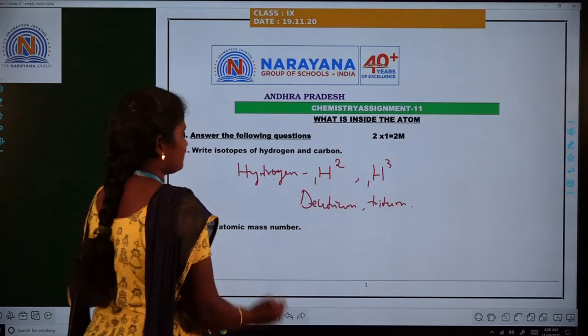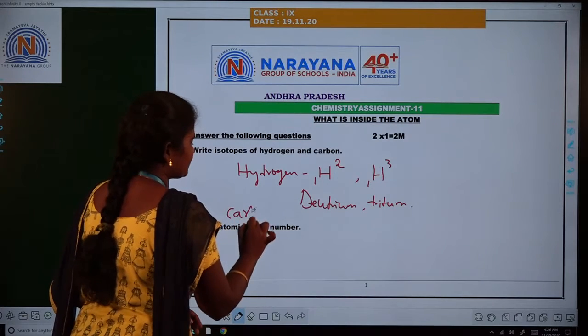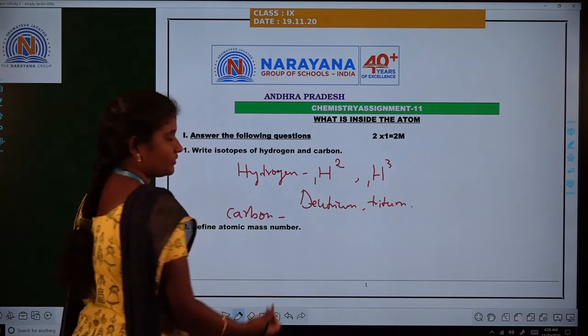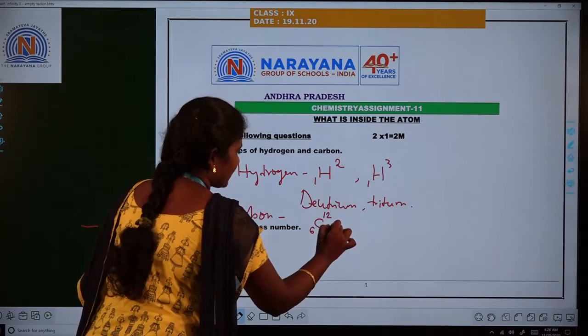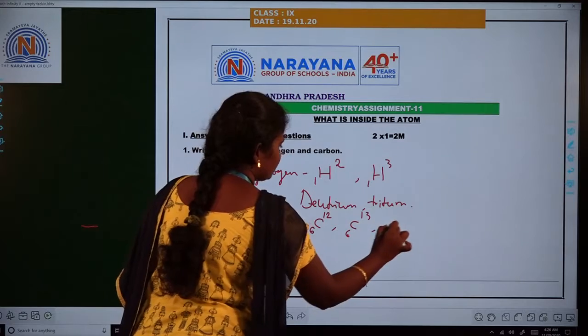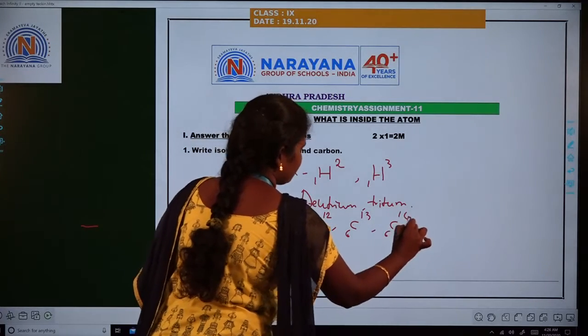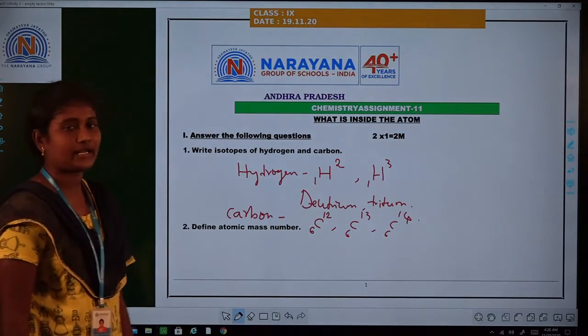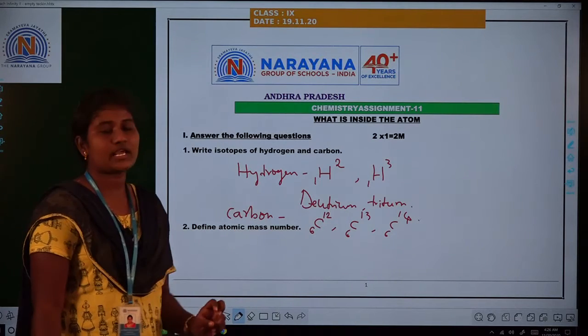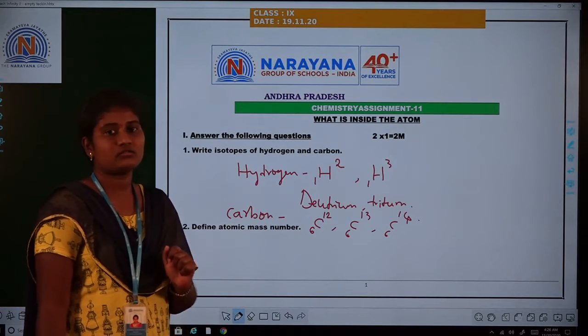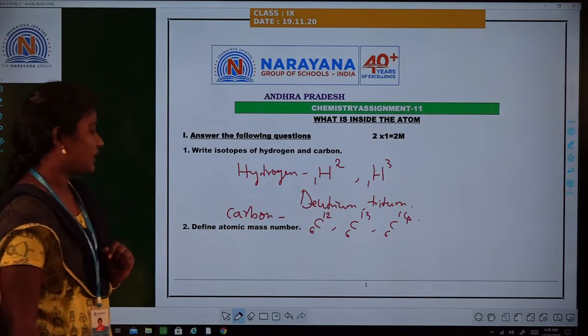Next, see the carbon isotopes: C-12, C-13, and C-14. These three are the carbon isotopes: 12, 13, and 14. And hydrogen isotopes: deuterium and tritium.